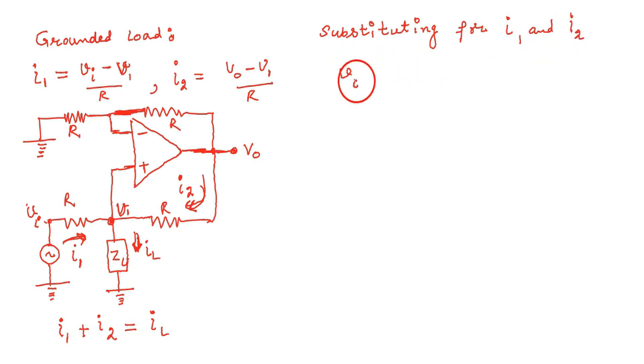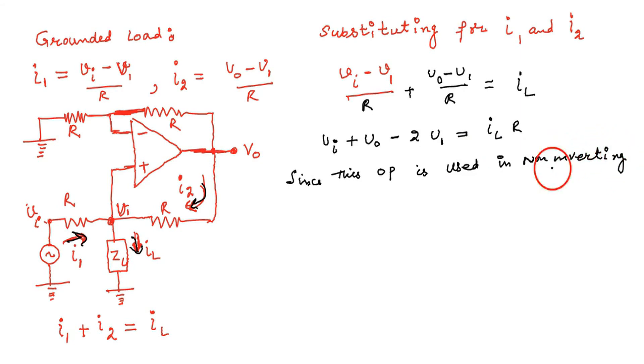Substituting the value of I1 and I2. After simplification, we are using this op-amp as a non-inverting amplifier and you know the gain of non-inverting is 1 plus Rf upon R1. Here Rf is R and R1 is R, so gain becomes 1 plus 1, which is 2.